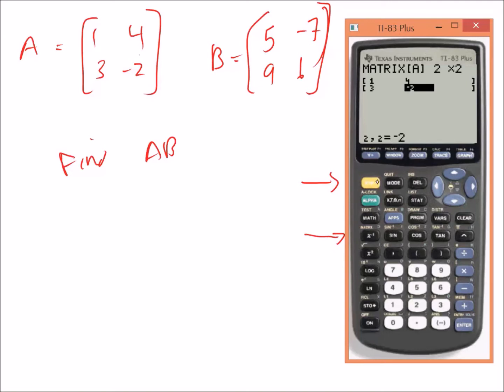You're going to do the same thing for matrix B. So second, matrix, edit matrix B. Tell it you want a 2 by 2, so 2 enter, 2 enter, and put in your values: 5, minus 7, 9, and 6.